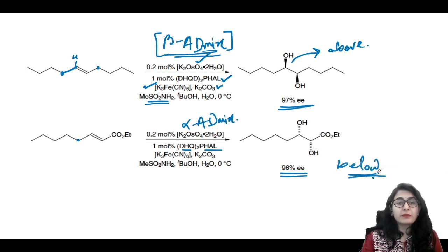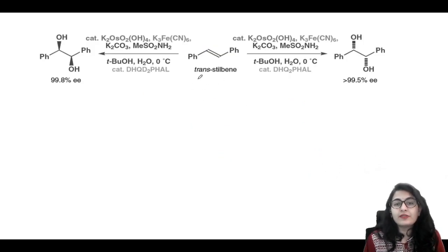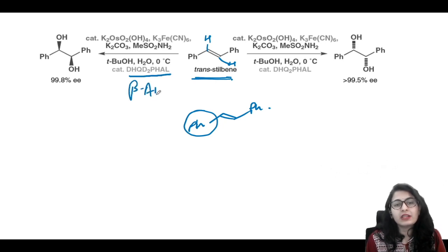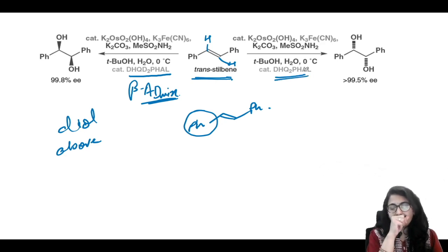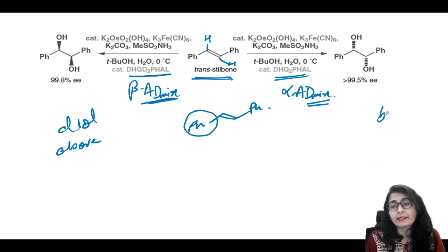Here we have trans-stilbene, which has one Ph on one side and another on the other. If you write or rotate it, the Ph is still on the left bottom corner. The molecule is written perfectly. Here we have (DHQD)₂-PHAL, the beta-AD-mix, giving the diol from above the plane. Next is (DHQ)₂-PHAL, the alpha-AD-mix, giving diol formation from below the plane.